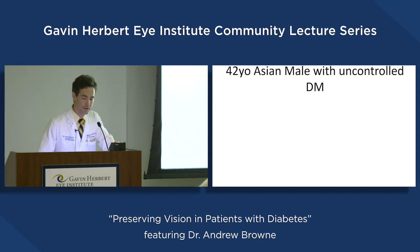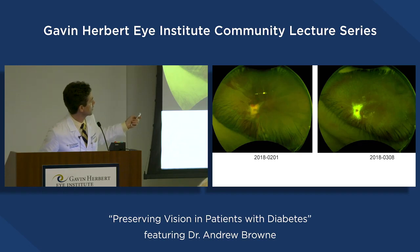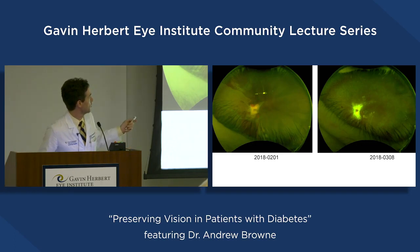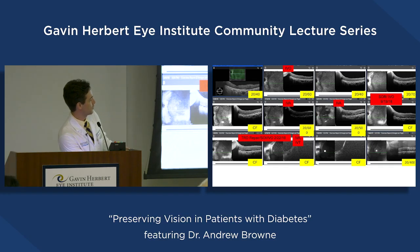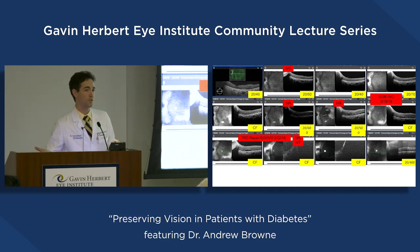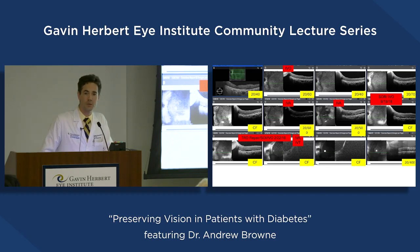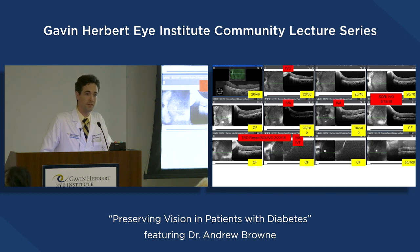A 42-year-old patient with uncontrolled diabetes had blood everywhere inside his retina in February 2018. In March 2018, surgery removed all the blood and scar tissue, restoring his vision. He came back to 20-40 and was able to return to work. When we say diabetes is the leading cause of permanent blindness in the working population, we're talking about people in their 20s, 30s, 40s, 50s, and 60s losing vision permanently — but in some instances we can achieve major successes.